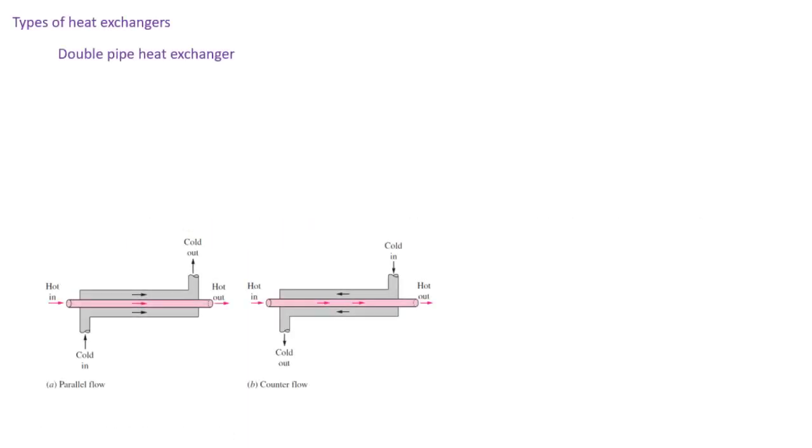There are many different types of heat exchangers, with the simplest being a double pipe or concentric pipe heat exchanger. There is an inner tube and an outer tube through which a hot and cold fluid flow. Those fluids may be flowing in the same direction, which is the case for a parallel heat exchanger, or they may be flowing in the opposite direction, which is the case for a counterflow heat exchanger.